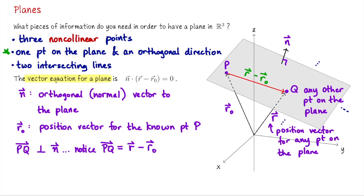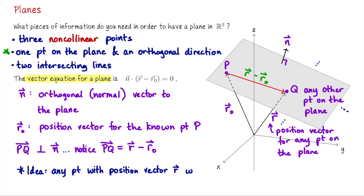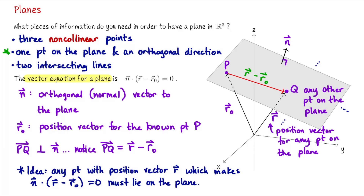This relationship — that the vector from one point to any other point on the plane must be orthogonal to n — is precisely what determines what we call the vector equation for this plane. This is an equation students sometimes struggle with because it's written with a dot product and it doesn't feel like a formula in the same way that, say, the equation of a line did. But this is our vector description of the plane. The idea behind this equation is: any point with position vector r which makes the dot product n · (r − r₀) equal to 0 must lie on the plane, and conversely, if you lie on the plane, you make that dot product 0.